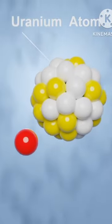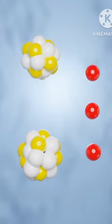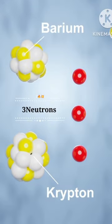When a uranium atom is hit by a neutron, its fission starts. Then the uranium atom splits into barium, krypton, and three neutrons.